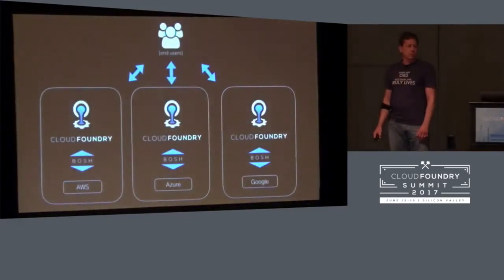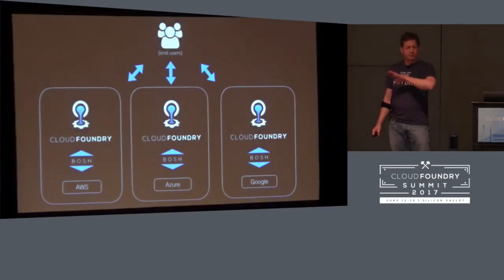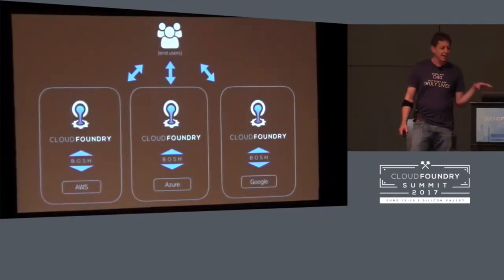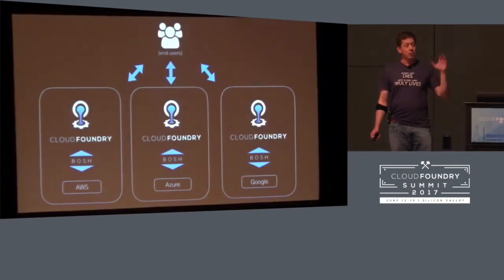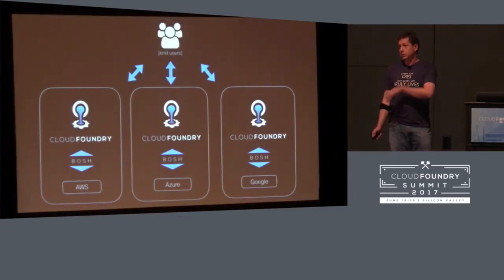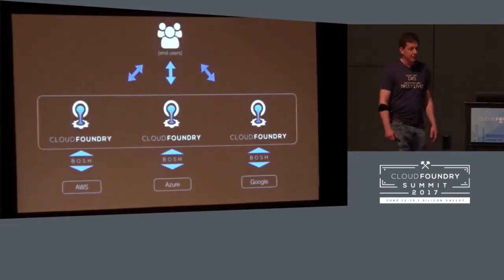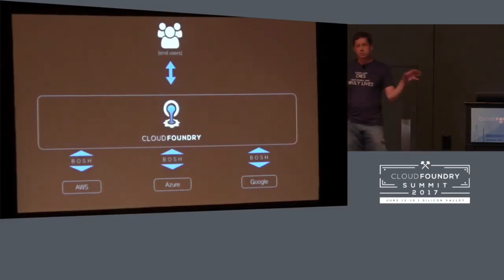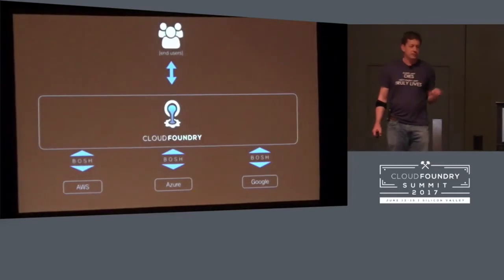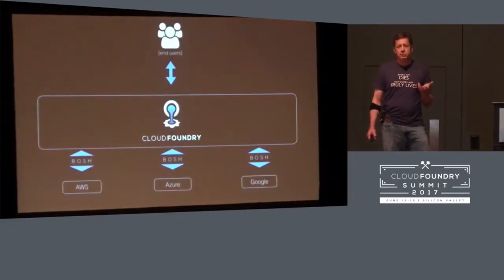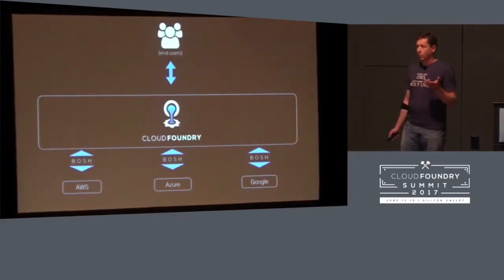With BOSH, you can deploy Cloud Foundry out to several different IaaSs, and from an end-user perspective, they don't know what IaaS or service provider that Cloud Foundry is running on. Active multi-cloud is where you have multiple instances of Cloud Foundry running on multiple different service providers, but from an end-user perspective, it just looks like one.